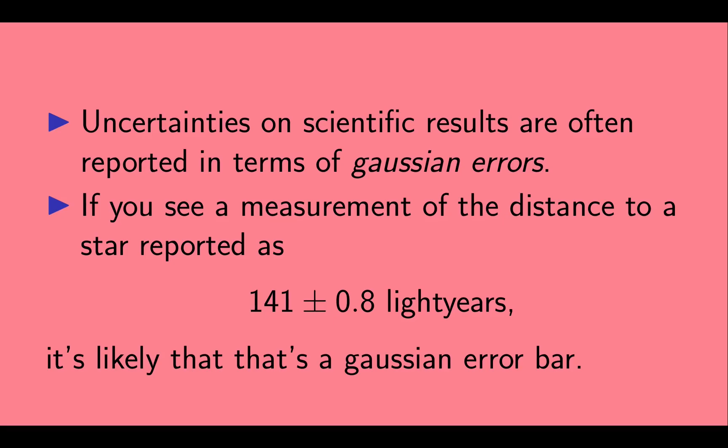So for example, if you see a measurement of the distance to a star reported as 141 plus or minus 0.8 light years, that result is likely utilizing a Gaussian error bar.